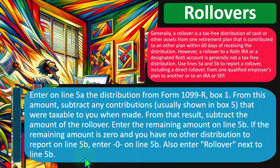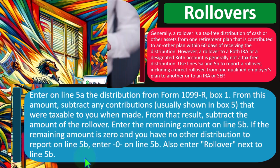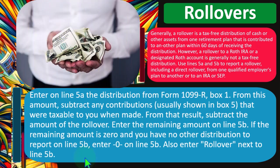So enter on line 5A the distribution from the 1099-R box 1. From this amount, subtract any contributions usually shown in box 5 that were taxable to you when made. From that result, subtract the amount of the rollover. Enter the remaining amount on line 5B.